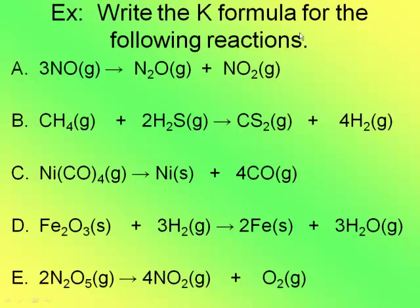So again, you always raise the products over the reactants. So I take the concentration of N₂O times the concentration of NO₂, both raised to the first power, divided by the concentration of NO cubed, because there's a 3 out in front of the NO.